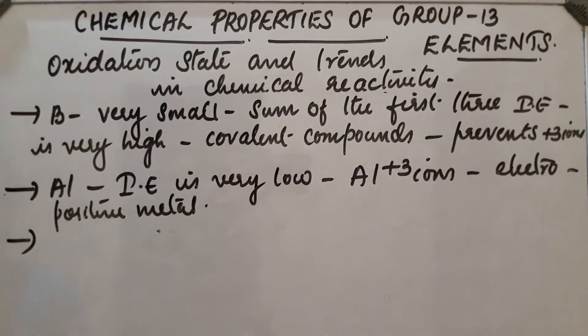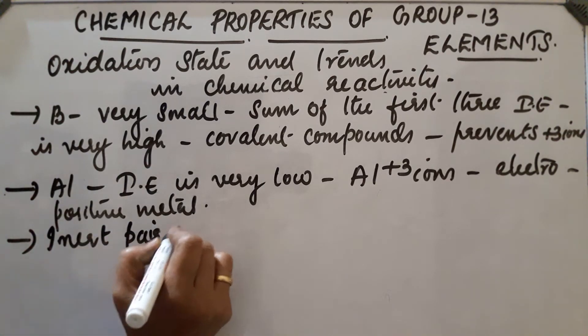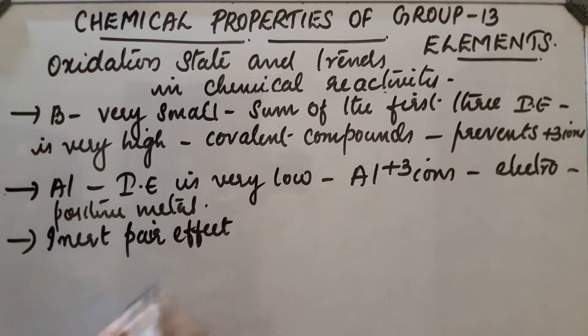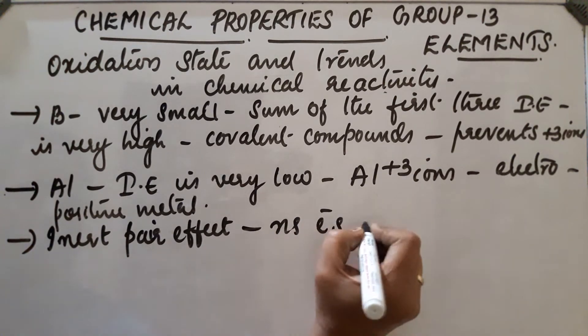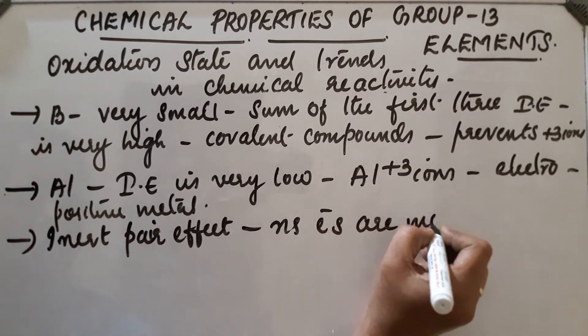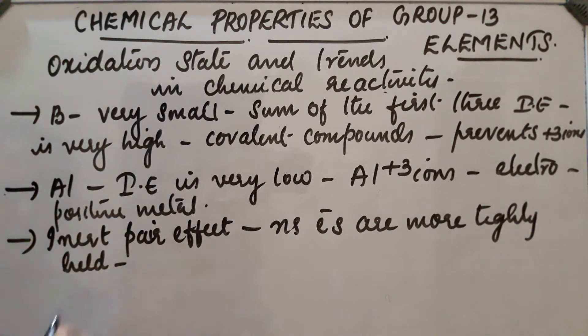Next, in the case of heavier elements there are d and f orbitals, so they have poor shielding effect and nuclear charge is high, so size decreases in the case of gallium. Also due to inert pair effect, the ns electrons are more tightly held.